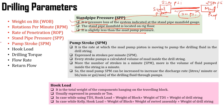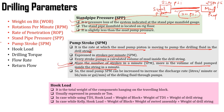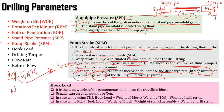Coming to pump stroke: it is the rate at which the mud pump piston is moving to pump the drilling fluid into the drill string, expressed in strokes per minute or SPM. Every stroke pumps a calculated volume of mud inside the drill string. The more the number of strokes per minute, the more the volume of fluid pumped. The mud pump SPM can be increased to increase the discharge rate. It is also commonly expressed in liters per minute, barrel per minute, or gallon per minute. We will be discussing various numericals related to pump strokes including duplex and triplex pump problems.